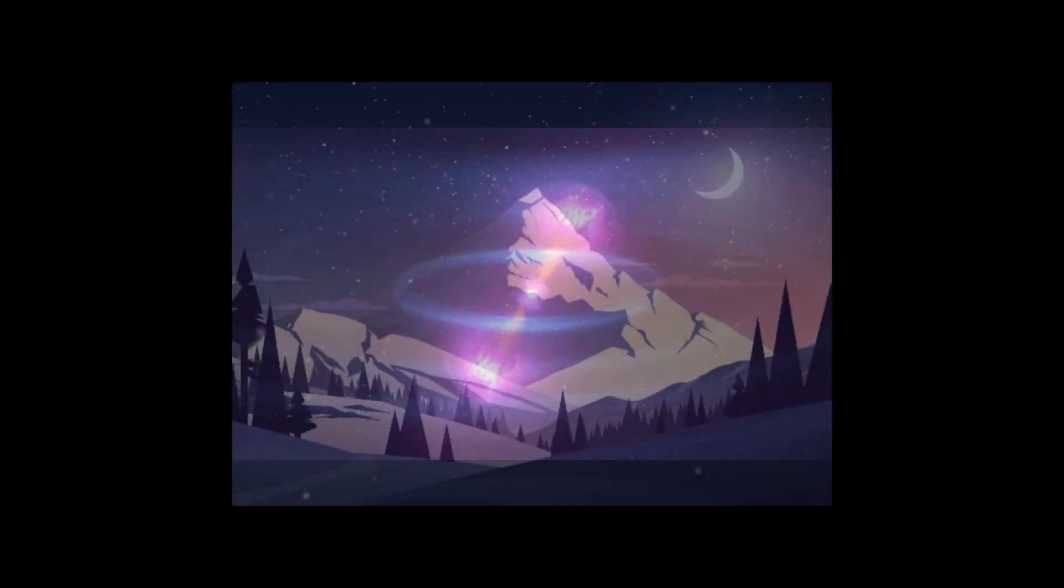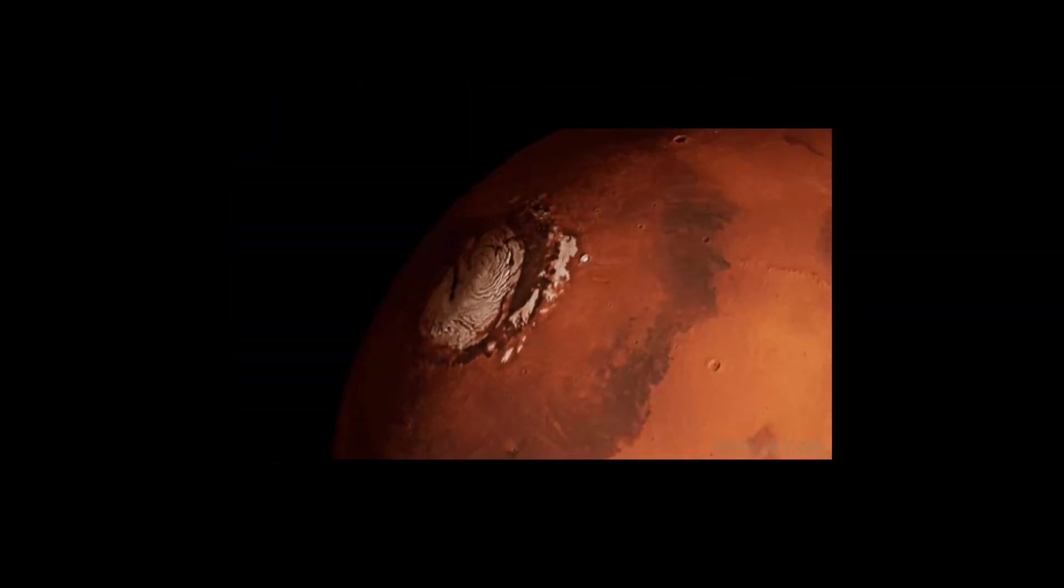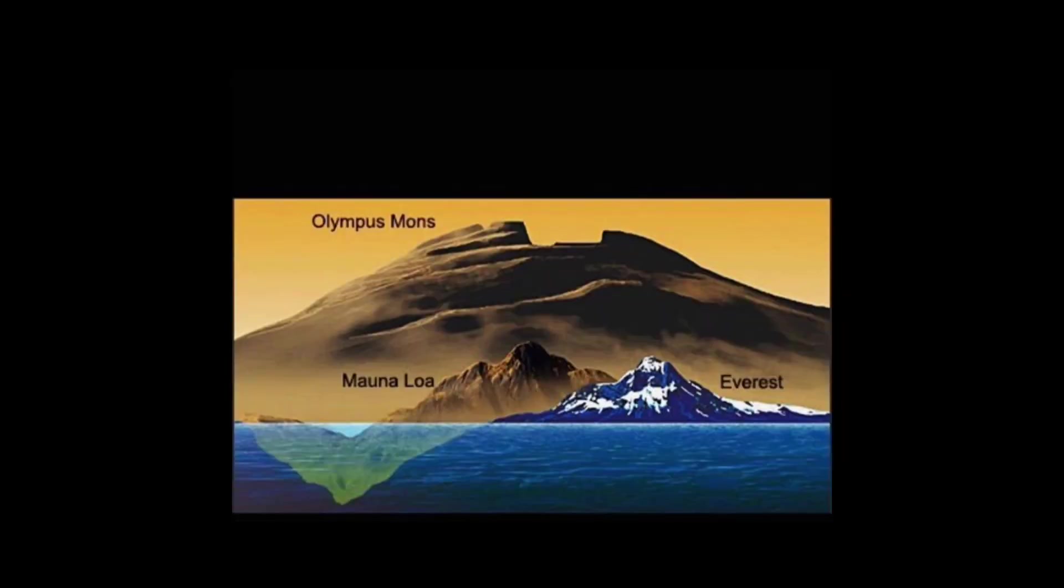The highest mountain and volcano in our solar system is Olympus Mons on Mars. It is 16 miles high, 374 miles in diameter, and covers an area around 120,000 square miles.